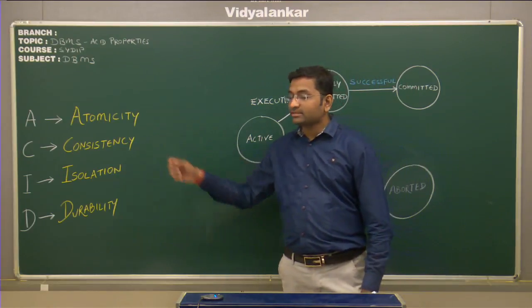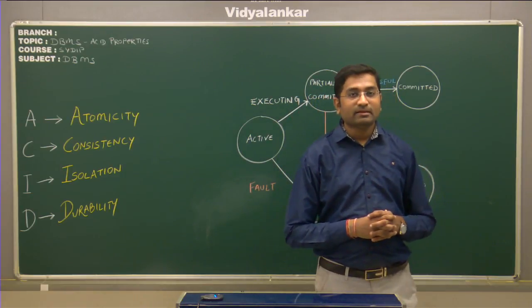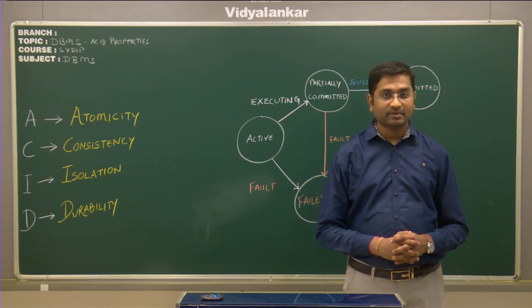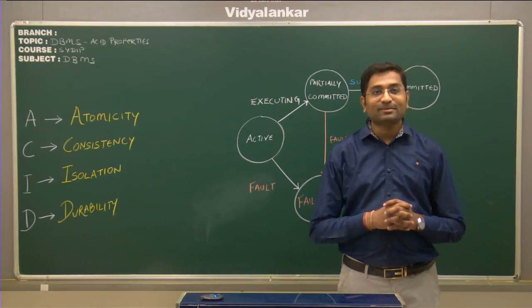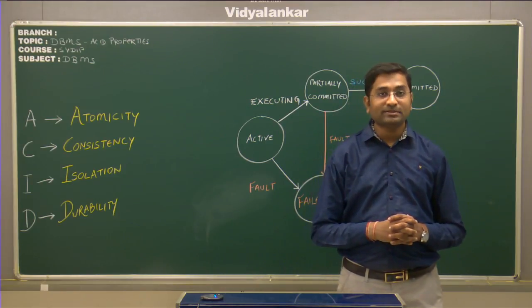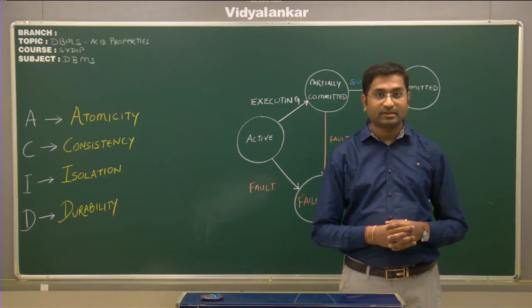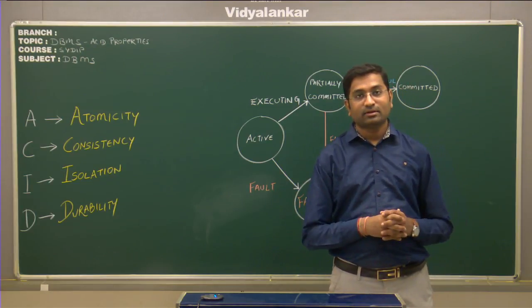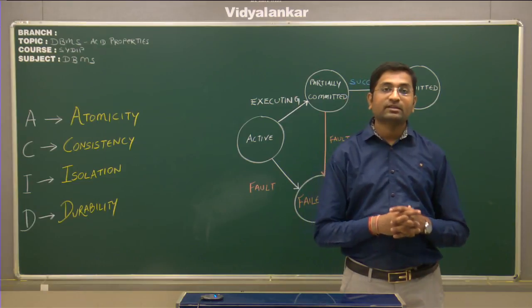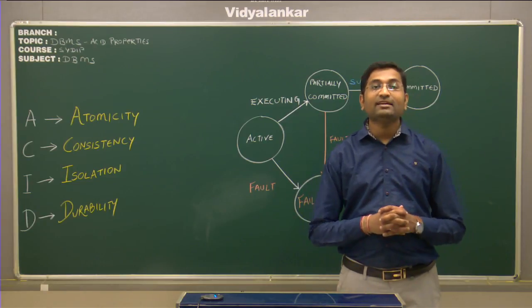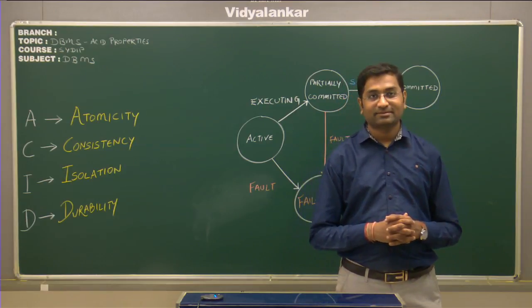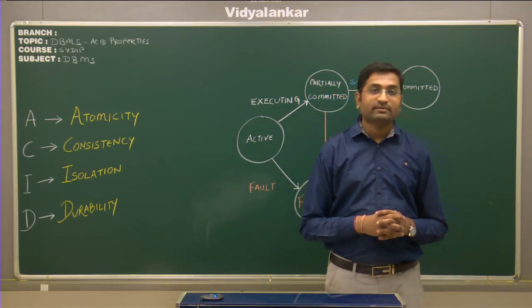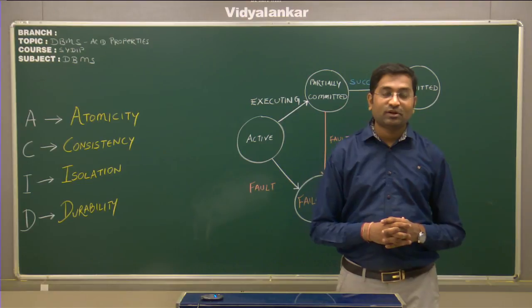The second property is consistency. This property ensures that the database remains in a consistent state after the transaction has ended. For example, if the account of the customer had a balance of 50,000 rupees before the transaction began, the database management system should ensure that the account balance does not go below rupees 0 after the transaction has ended, because any customer account cannot have a negative balance. So consistency ensures the database remains in a consistent state even after successful execution of a transaction.